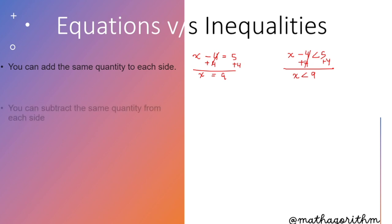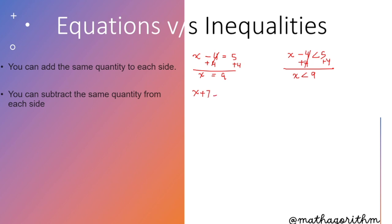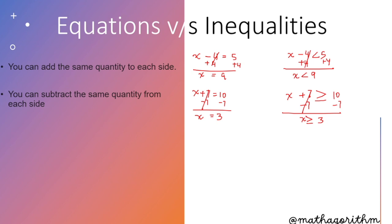The next point: you can subtract the same quantity from each side. In equations, x plus 7 equals 10. The similar inequality is x plus 7 is greater than or equal to 10. To cancel the 7, subtract 7 from both sides. In the equation, x equals 3. In the inequality, x is greater than or equal to 3.